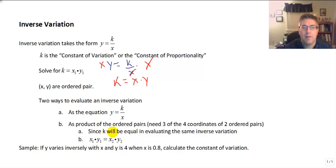Now you'll need three of the four coordinates of the two ordered pairs. But since k in the same inverse variation is equal, k will equal k. So x1y1 equals x2y2.